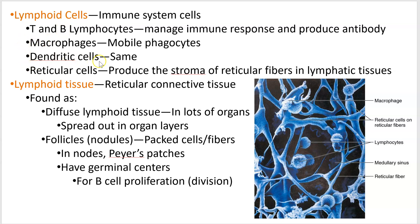Macrophages and dendritic cells are both phagocytes, and reticular cells make this reticular fiber over here. The general pattern of these reticular fibers is called stroma. This is where the phagocytes and lymphocytes hang out to await their enemies — pathogens.